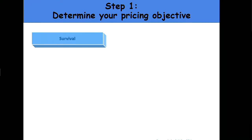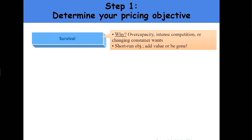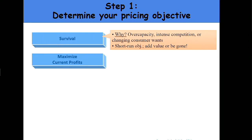When I say pricing objectives in the first step, the first and foremost that a lot of companies try to do is pricing to survive — we're just trying to make money, we're about to go bankrupt. There's sort of this short-term demand; we need funds to keep the organization alive. Conditions that often favor this include competition over capacity.